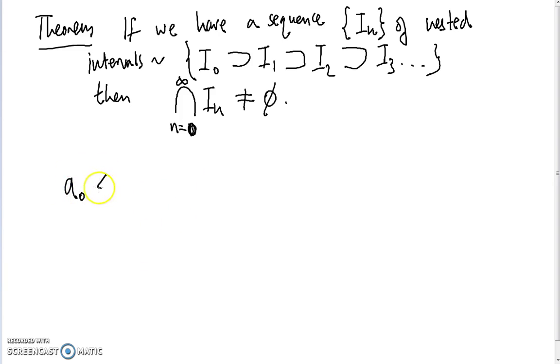So essentially we have this sort of sequence for a's, it's increasing, and for b's we have this sequence which is decreasing.